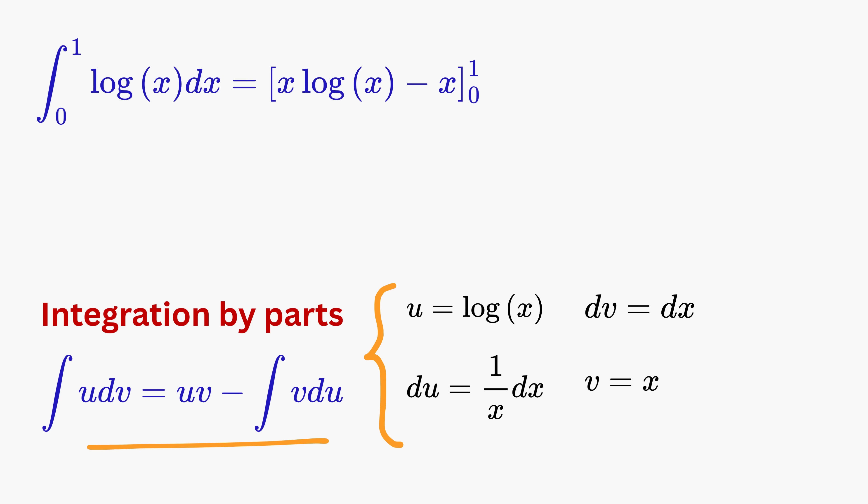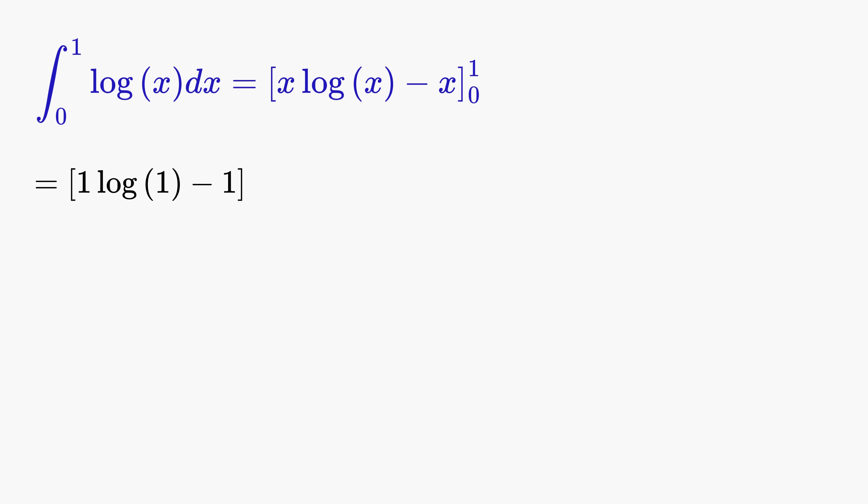Next we evaluate this expression from 0 to 1. At the upper limit 1, the natural log of 1 is zero, so the expression becomes minus 1. At the lower limit zero, this term becomes zero. Now we cannot directly substitute zero because log(0) is not defined, so we take a limit as a variable, say a, which approaches zero from the right.